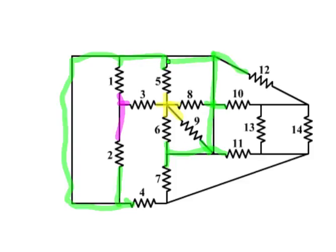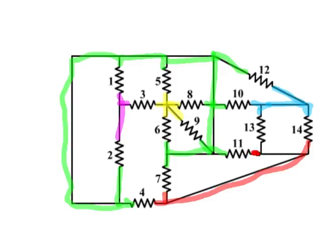Any resistor which has green on one side and yellow on the other side — those ones are in parallel with each other. I can continue to work with the rest of the circuit and label those sections as individual colors as well, and finally get my last section, all at the same color. Anything which has the same set of colors — like green and red, and green and red — must be in parallel to each other.